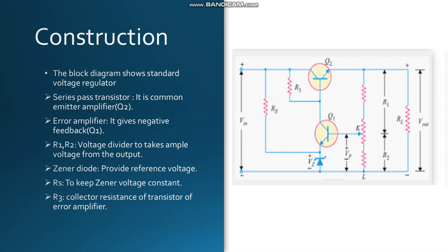The zener diode is used to provide reference voltage VZ to the circuit. RS is the series resistor connected to the zener, which keeps the zener voltage constant. R3 is the collector resistor of the error amplifier transistor.